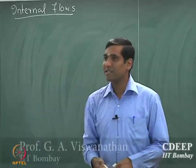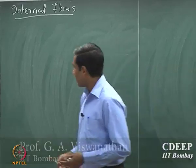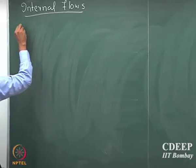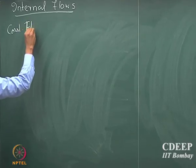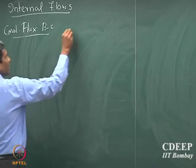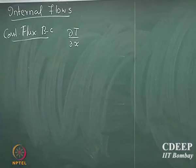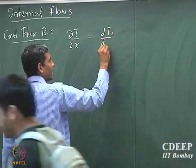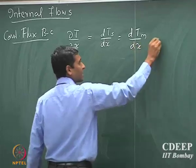By observing some of the interesting features of heat transport when there is a fluid which is flowing through a pipe, we are going to develop further on that. So just to recap: if it is a constant flux boundary condition, we said that dT/dx equals dTs/dx equals dTm/dx, and that is equal to a constant.